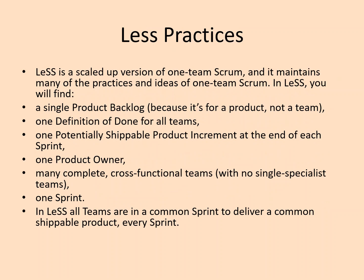LeSS is a scaled-up version of one-team Scrum and it maintains many of the practices and ideas of one-team Scrum. There is a single product backlog because it is for a product, not a team, and one definition of done for all teams so they don't deviate. Every team focuses on one definition of done, and there is one potentially shippable product increment at the end of each sprint, and one product owner because there is only one product backlog.